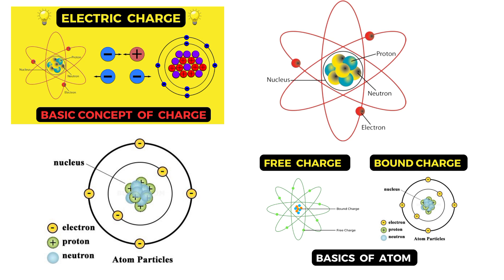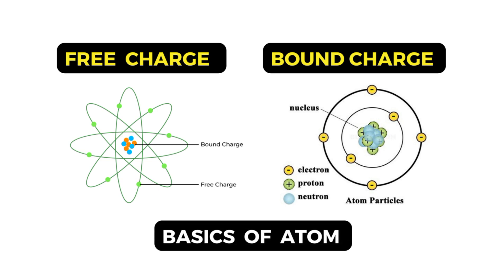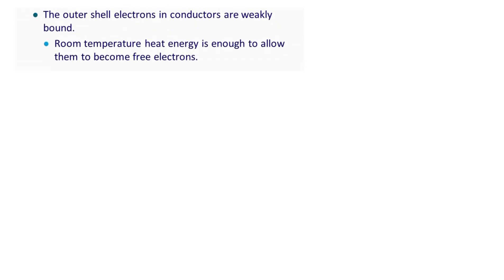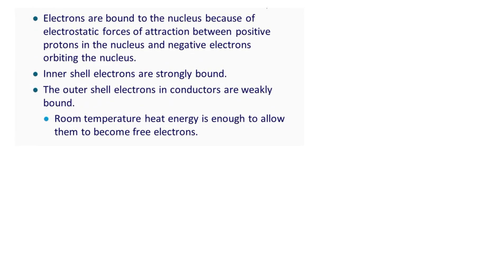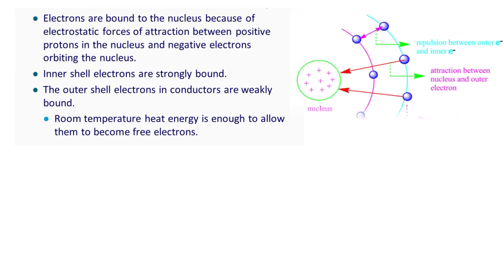Let us start the video without wasting much time. When an electron revolves around the nucleus in a fixed orbit, it is held by a Coulombic force of attraction, and it is called a bound charge.